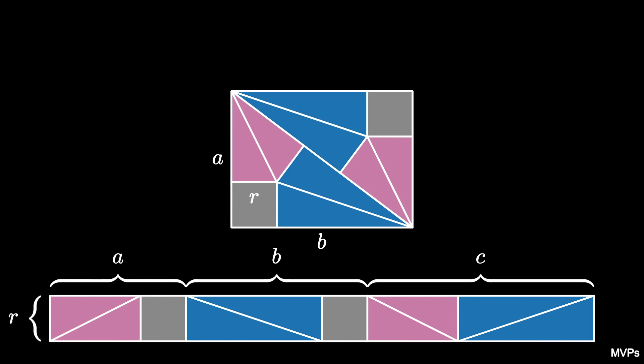Because the areas of these two rectangles must be equal, we can equate the areas to see that A times B must be equal to R times A plus B plus C.